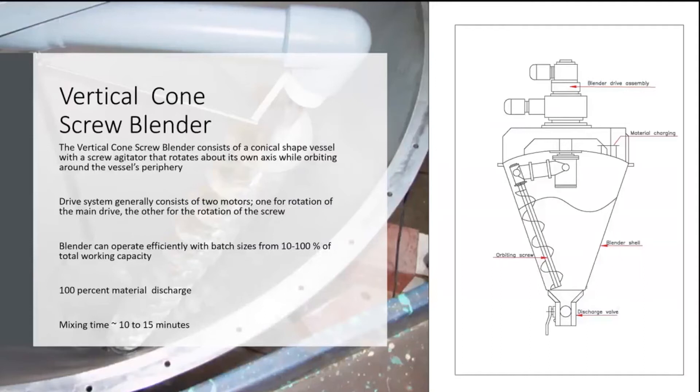So the screw here is an orbiting screw. It orbits around the periphery of the vessel and gently lifts the material up, and then the material comes down by gravity.